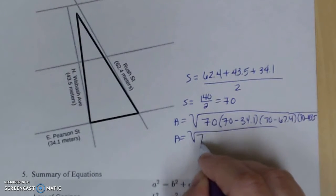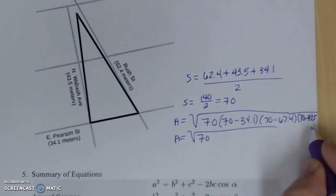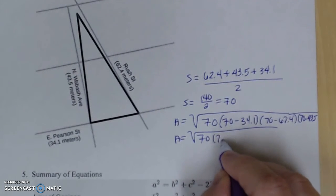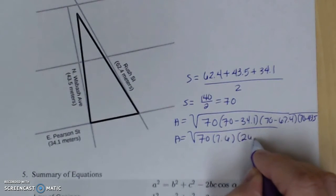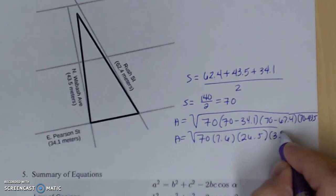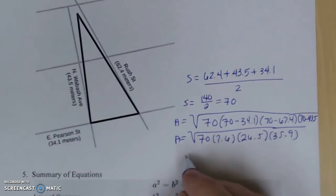So my area equals square root of 70 times each of these differences: 7.6, 26.5, and 35.9 in no particular order.